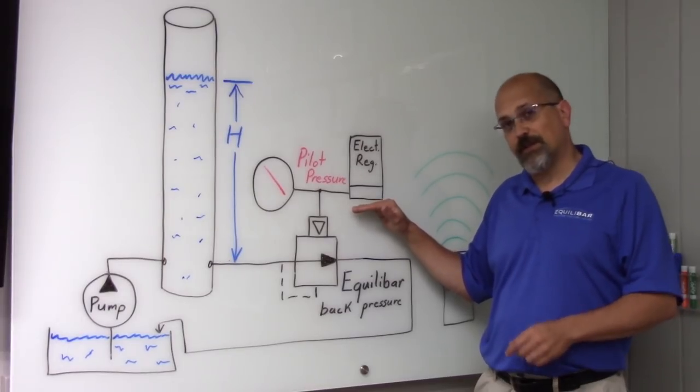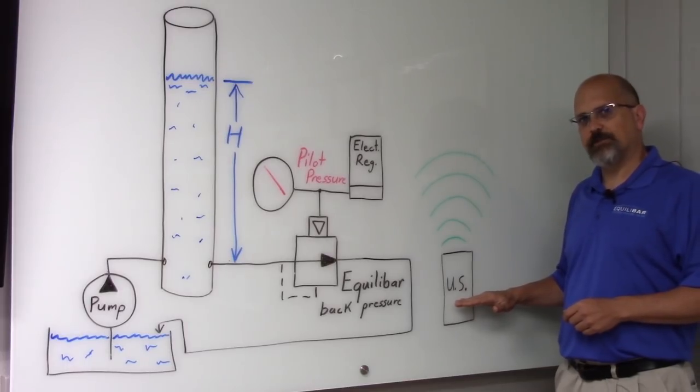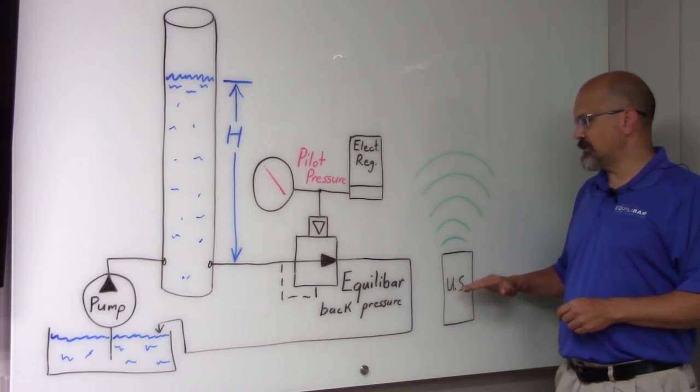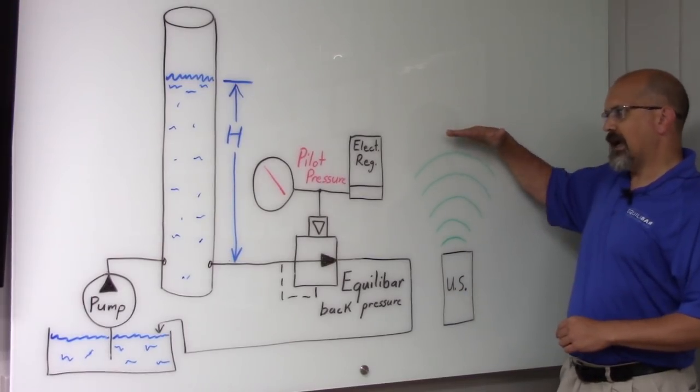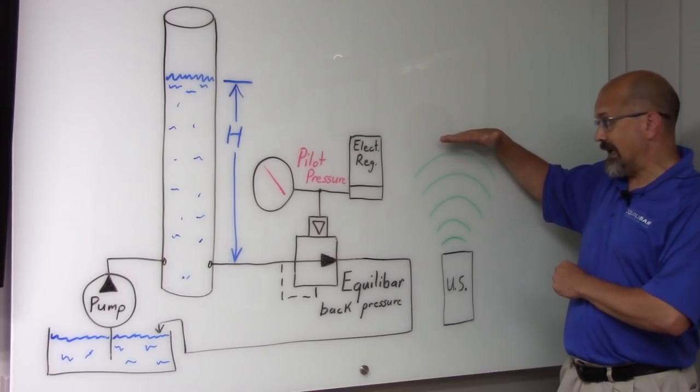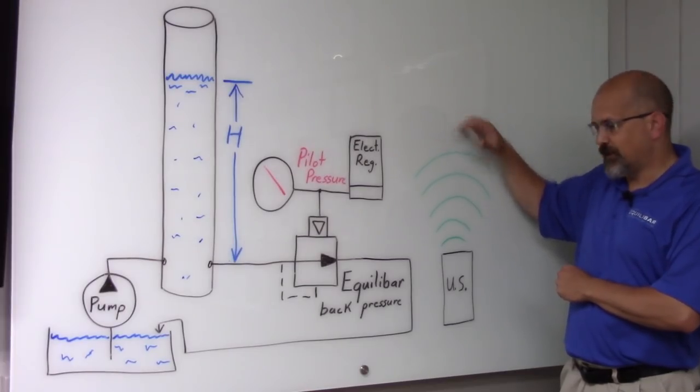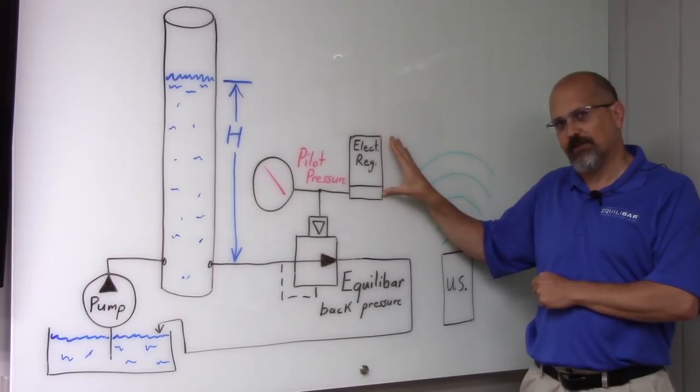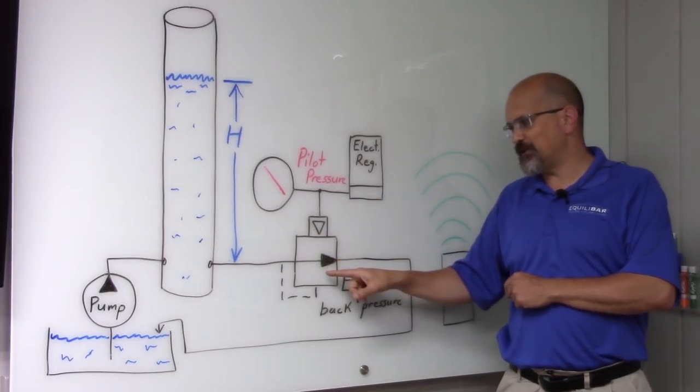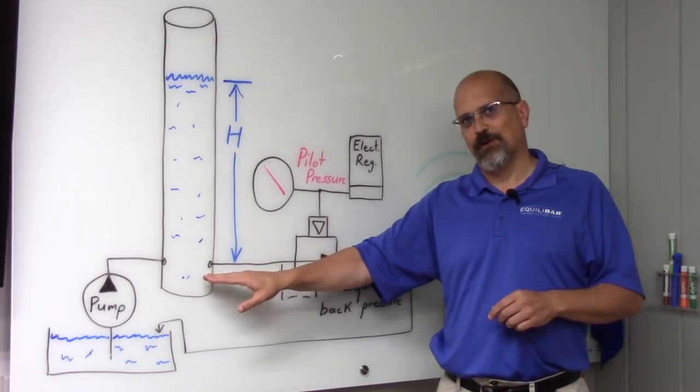The electronic pressure regulator set point comes from an ultrasonic sensor, and that ultrasonic sensor measures distance. For the demonstration, I'm going to use my hand to set the level of the ultrasonic sensor, which sets the command to the electronic pressure regulator, which sets the pilot pressure to the back pressure regulator, which then controls the pressure in the water column.